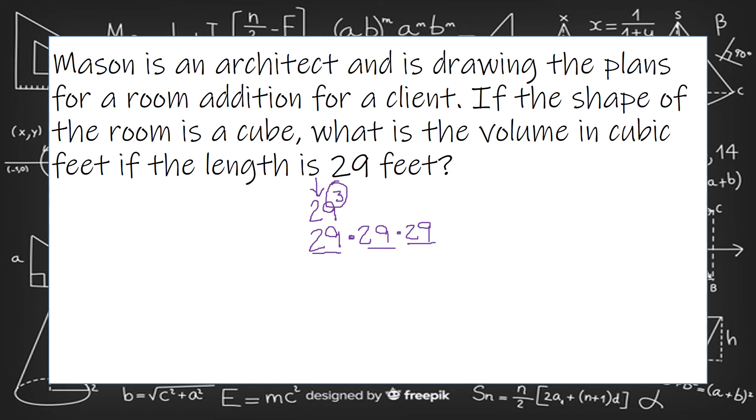So you can use your calculator to multiply 29 times 29 times 29. And you would get 24,389. And since this is feet,